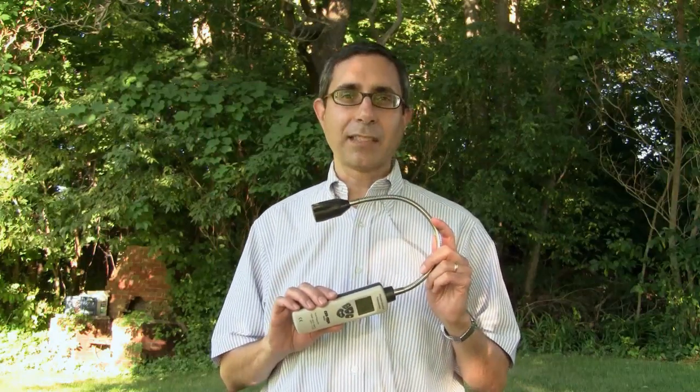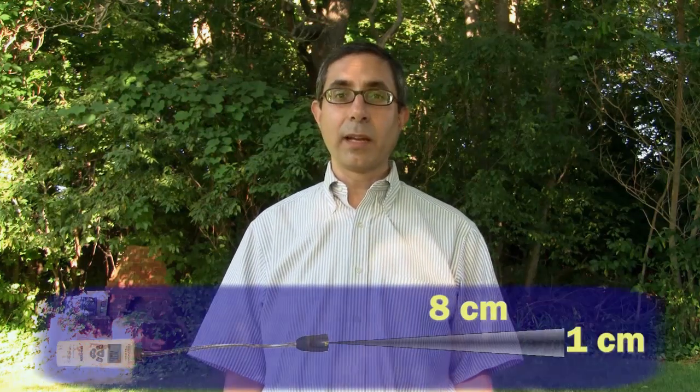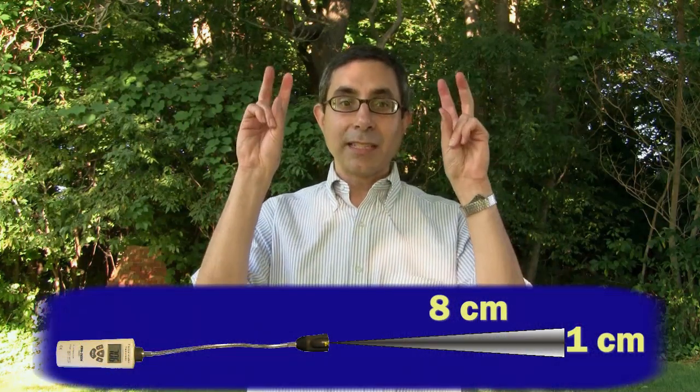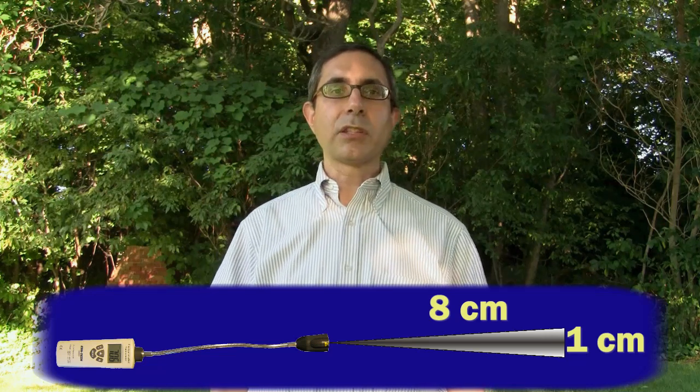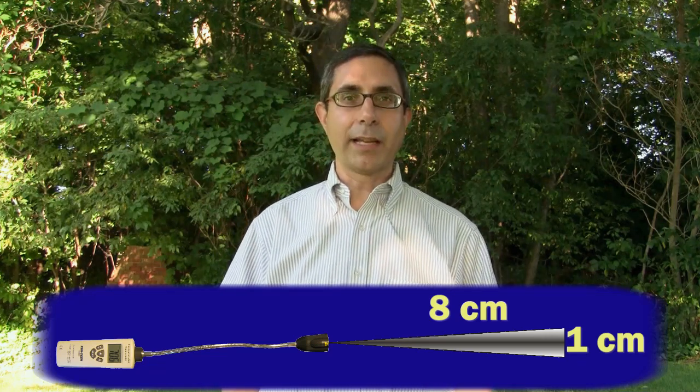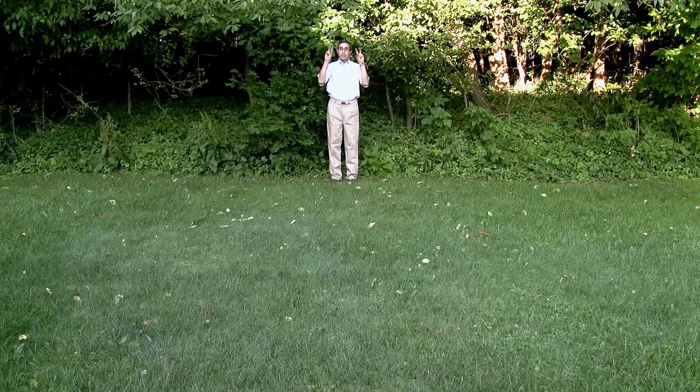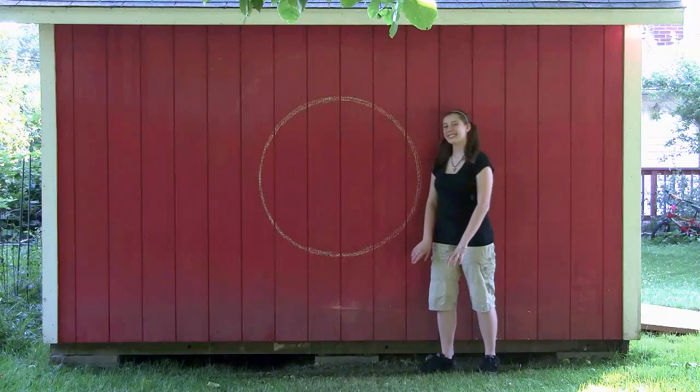This thermometer has a spot size of 8 to 1. That means if I'm 8 centimeters away, the sensor sees and measures a circular area 1 centimeter wide. If I'm 8 meters from an object, the sensor sees and measures an area 1 meter across.